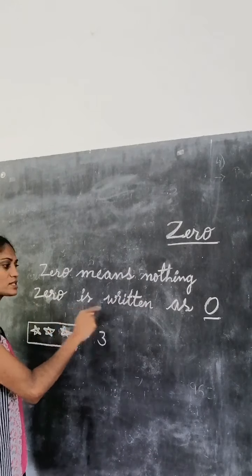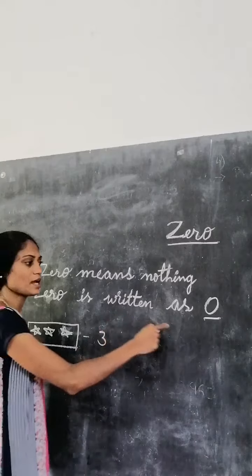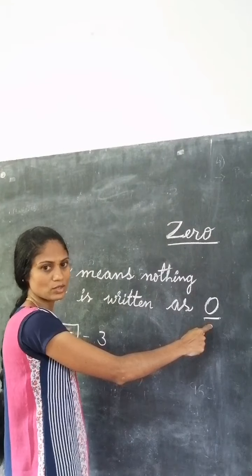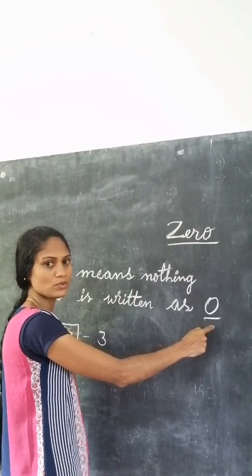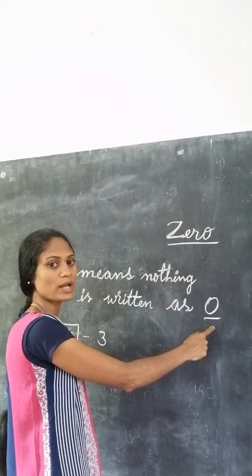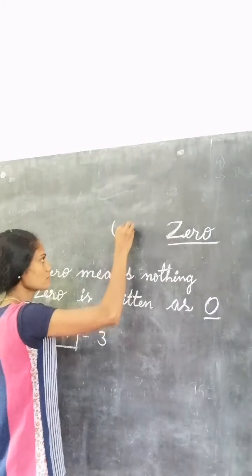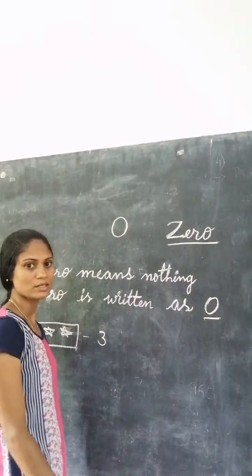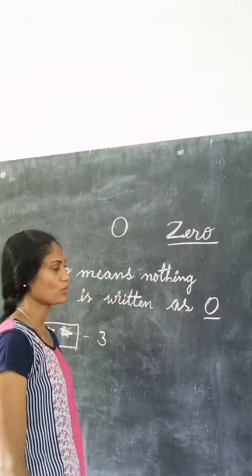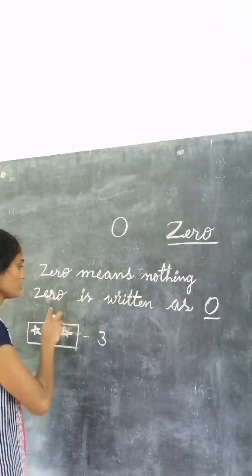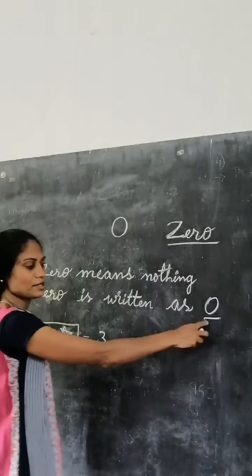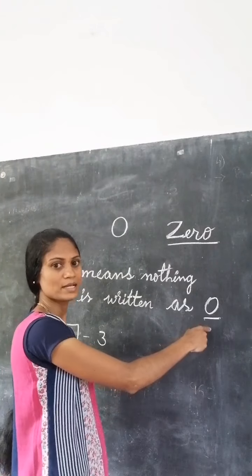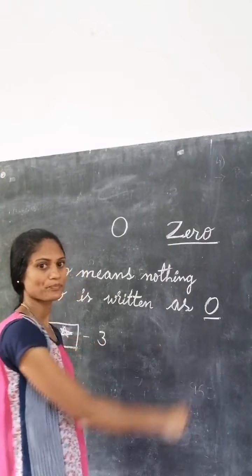Zero is written as zero. You see how to write zero. This is zero. Zero is written as round. It is zero.